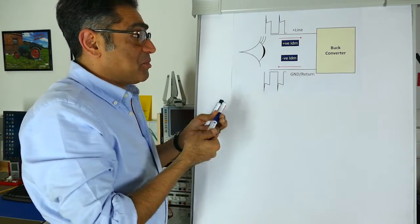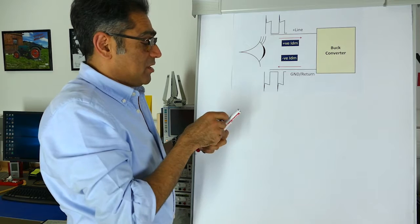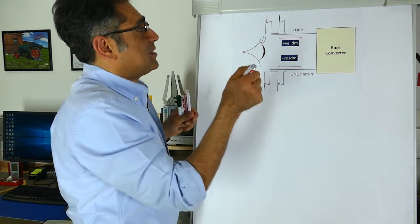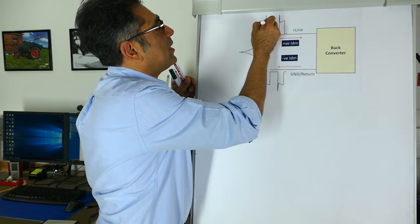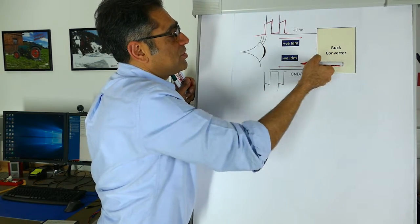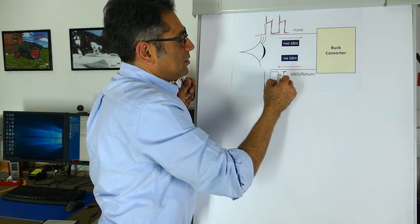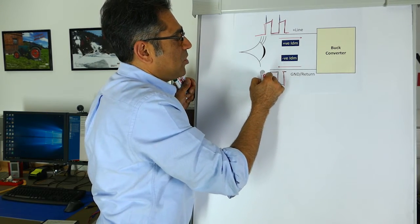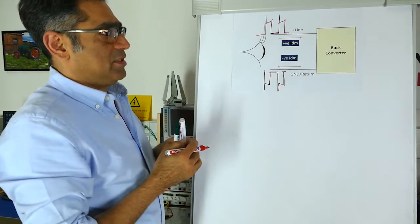For example, a power supply—let's say for simplicity a buck converter—what you have here, as you can see, is a current that is going in that looks like so. It's going in on the line, and on the return it will look the opposite, and we're used to dealing with it all the time.